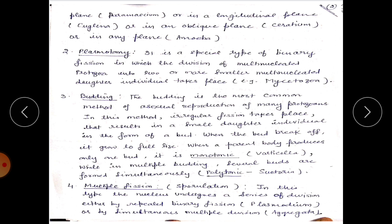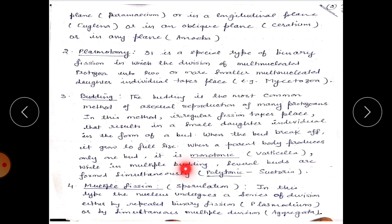Budding is a most common method of asexual reproduction in many protozoans. In this method, irregular fission takes place resulting in a small daughter individual in the form of a bud. When the bud breaks off, it grows to full size. When a parent body produces only one bud, it is known as monotonic — example is Vorticella — while when several buds are formed simultaneously, it is known as polytonic, occurring in Suctoria.